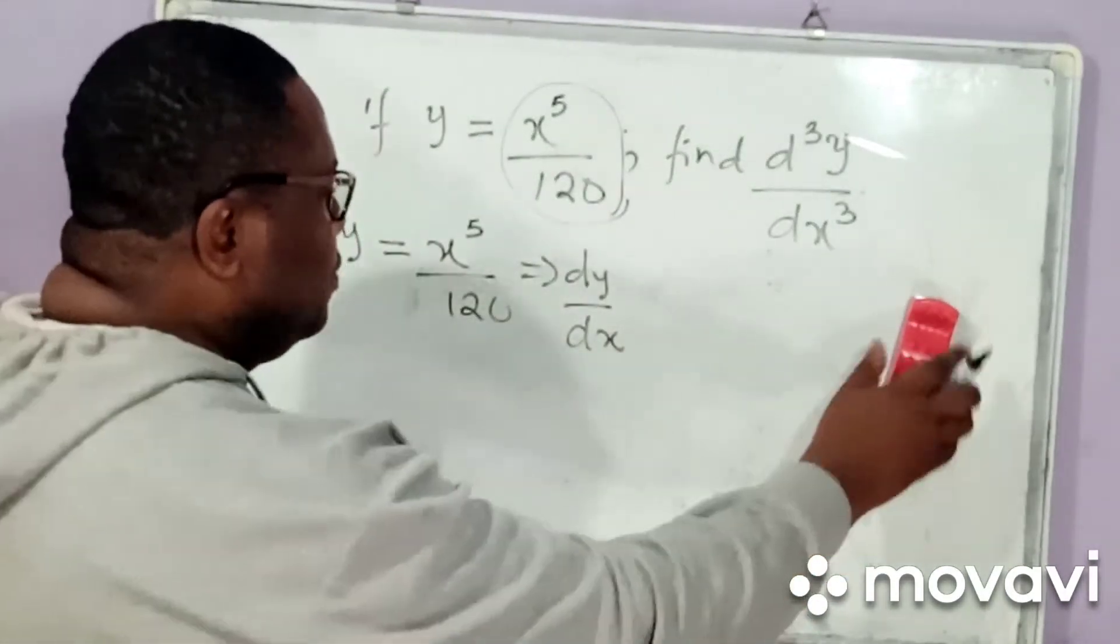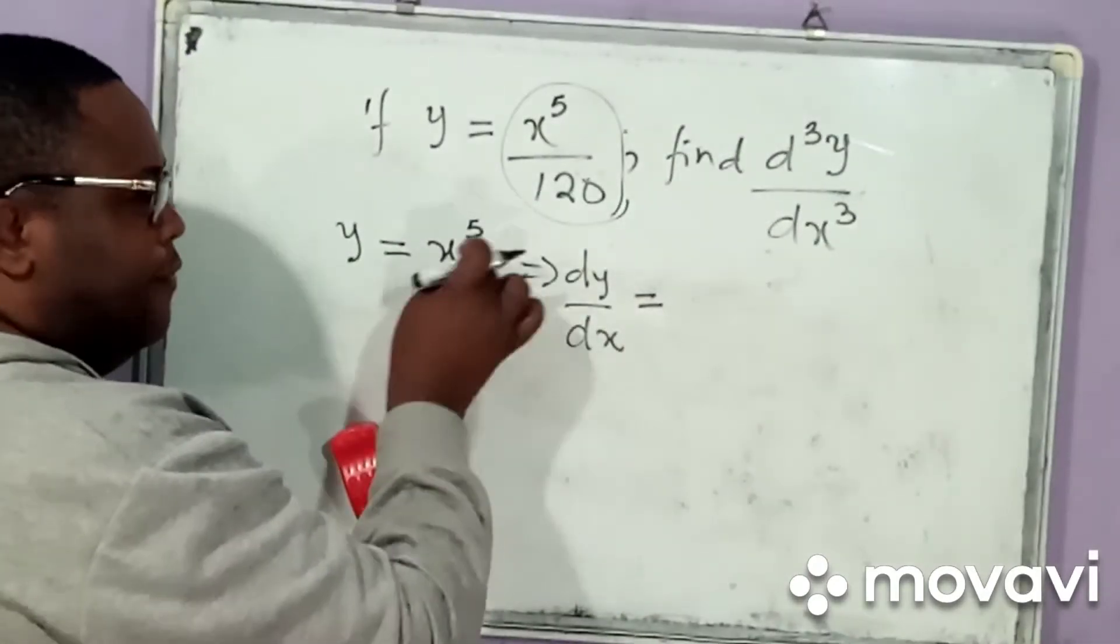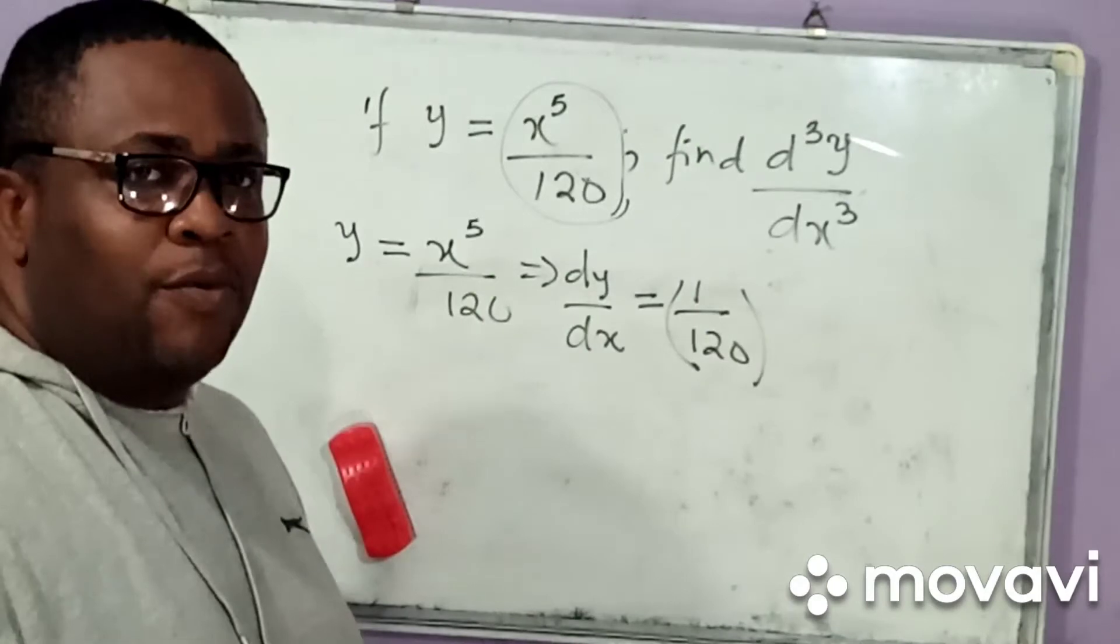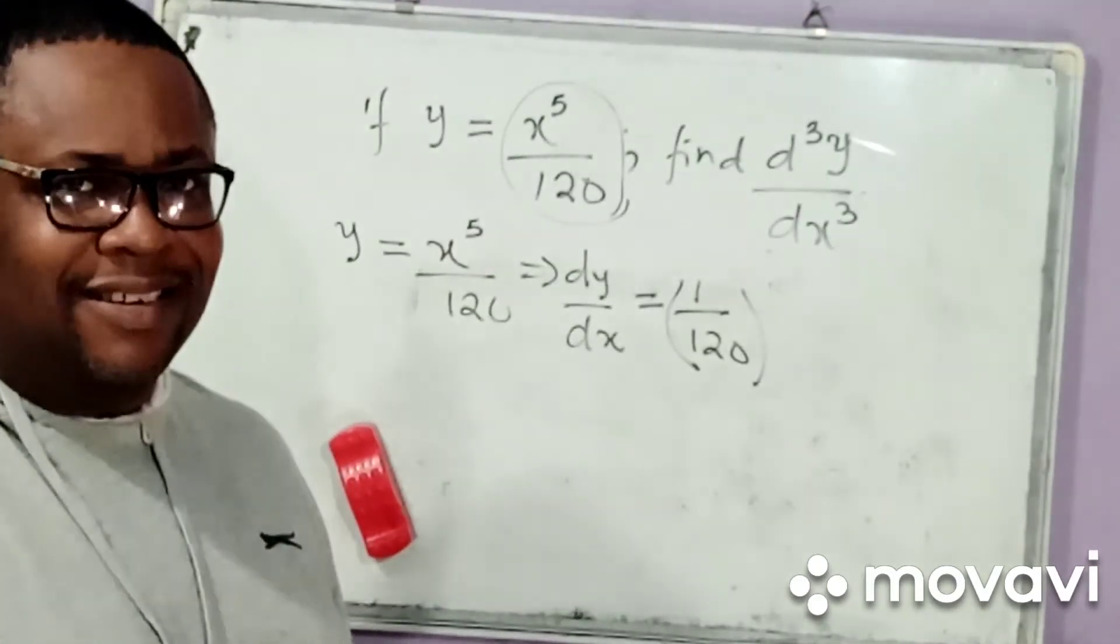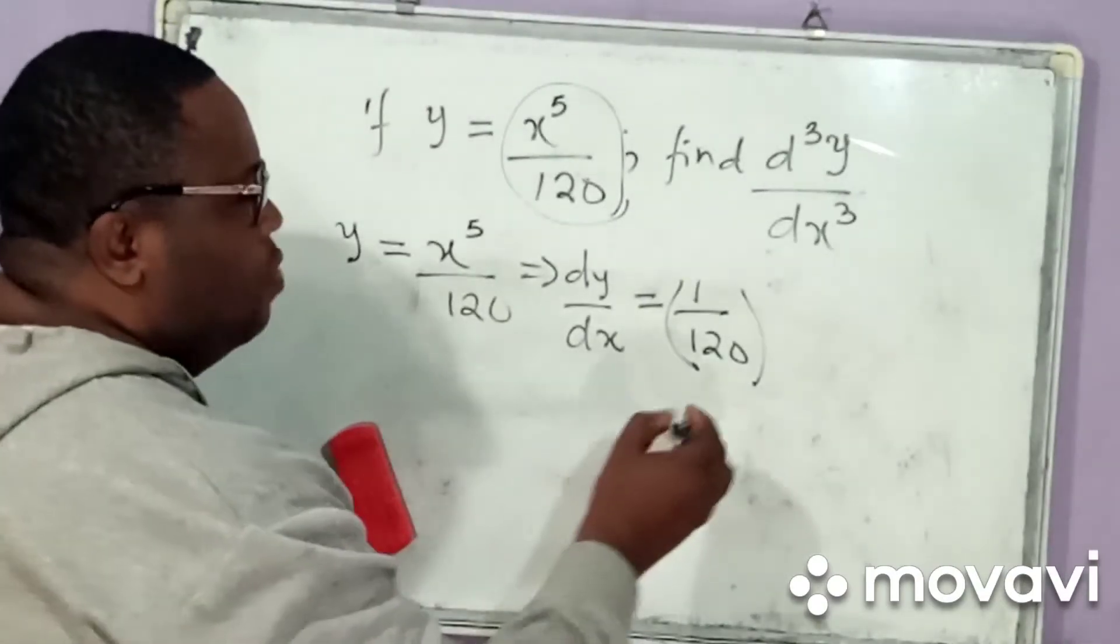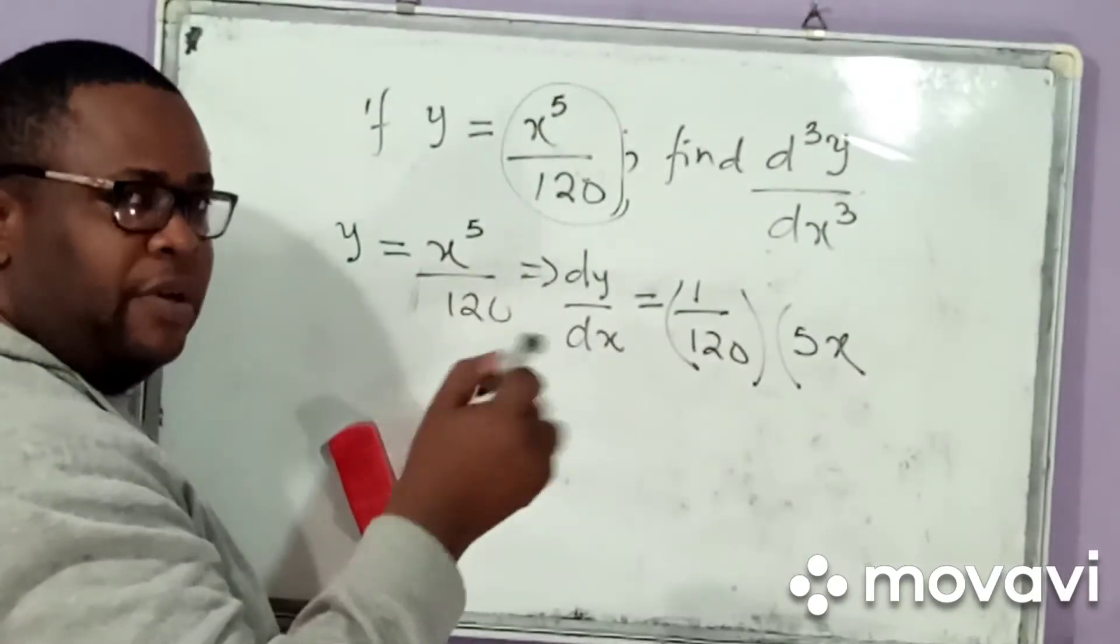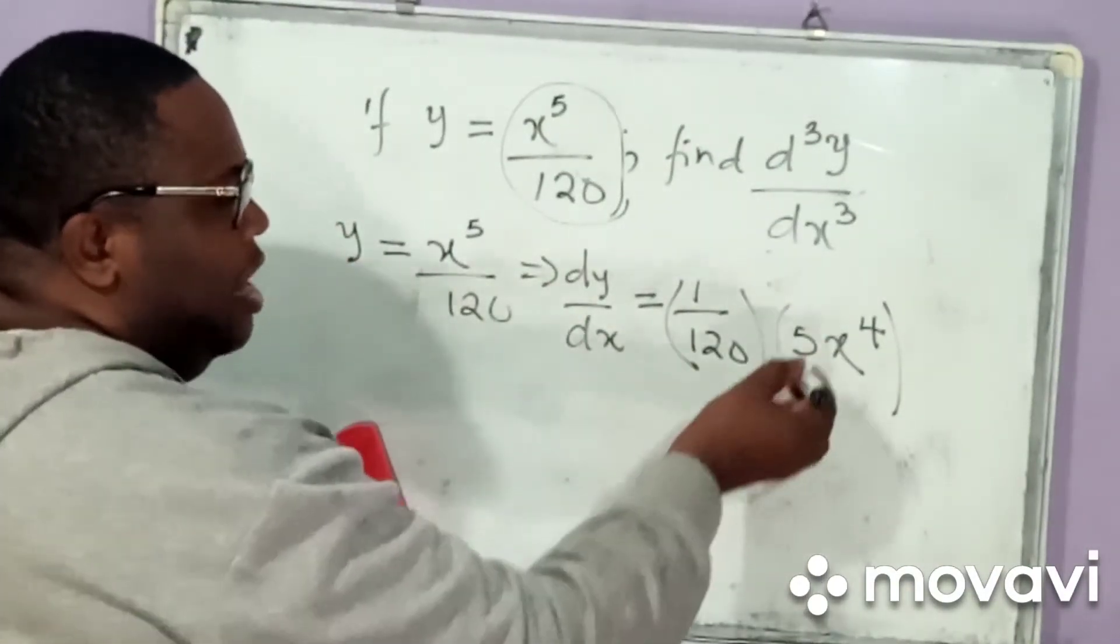If I differentiate this, this will be simply as, you know, this function can be looked upon like 1 over 120. Then, we are going to apply the rules of differentiation that we have learned from this channel. Now, this simply becomes equal to, I will bring down 5. So, I simply have 5x. Then, 5 minus 1, of course, gives me 4. So, I close that.